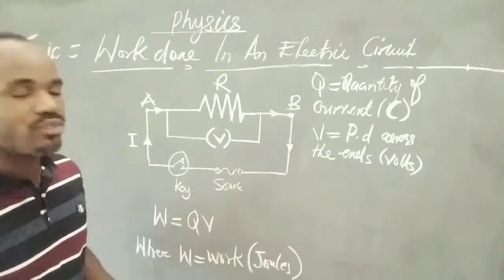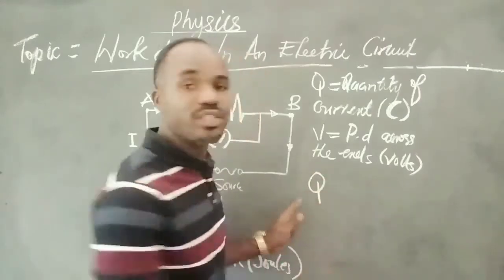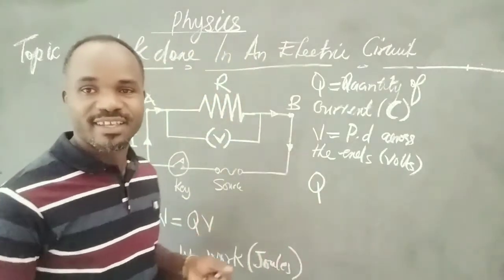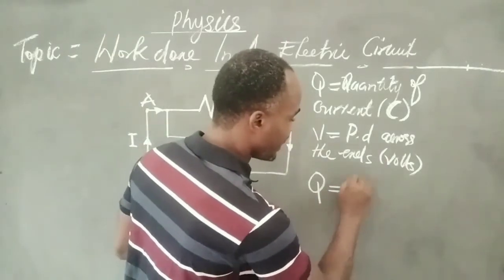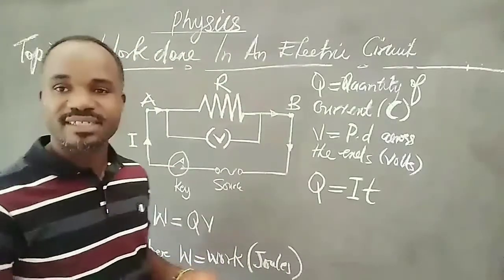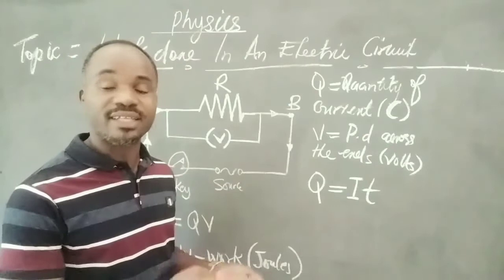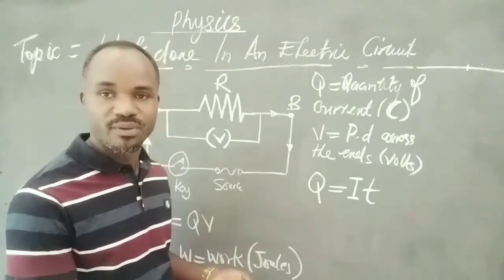So having said that, the last thing we need to understand is that Q, being the quantity of current flowing in the circuit, is given as I and T. I is the current. Then T is the time at which the current flows.